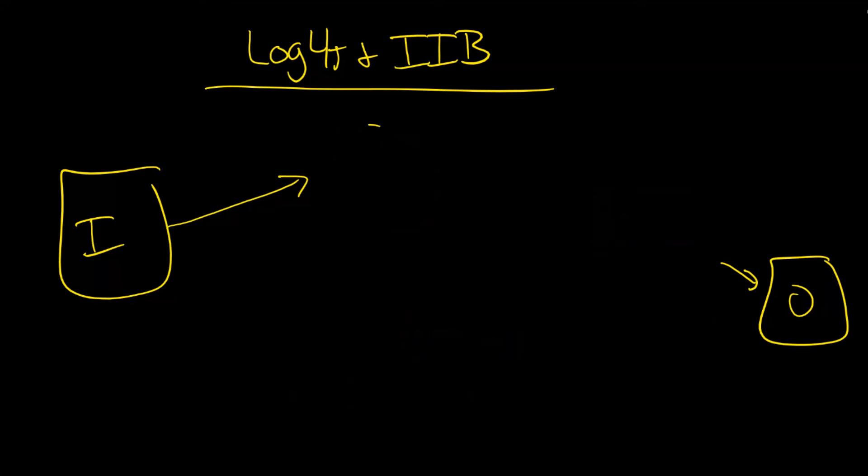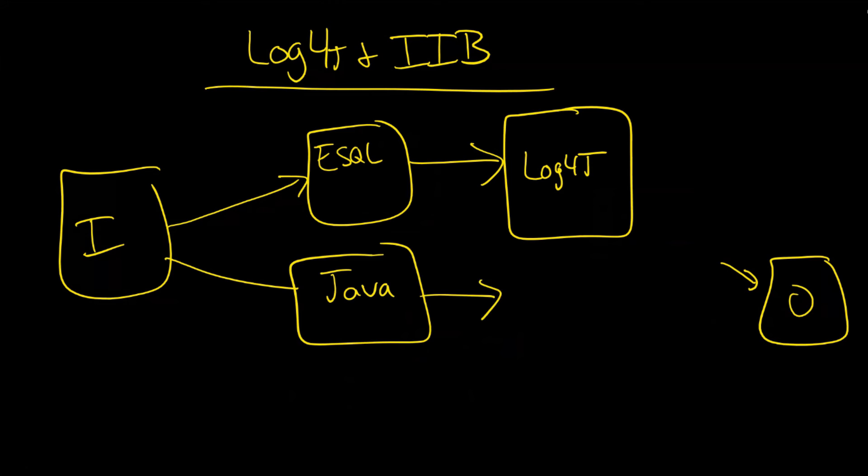your eSQL would be here. And then you would connect it into a new kind of node called a log4j node. And then you separately might have your Java down here. So maybe you're doing something like this. And then that also could be logged into this log4j or connected to a log4j node.